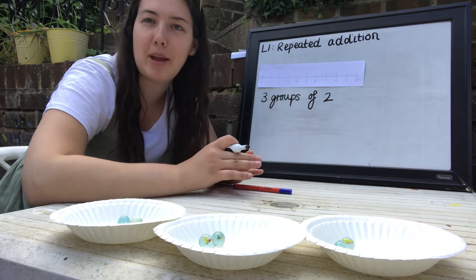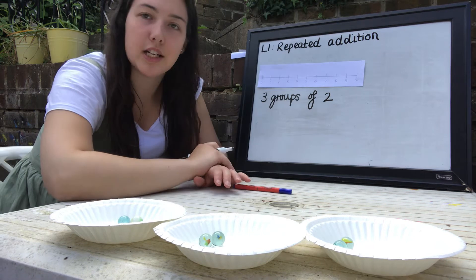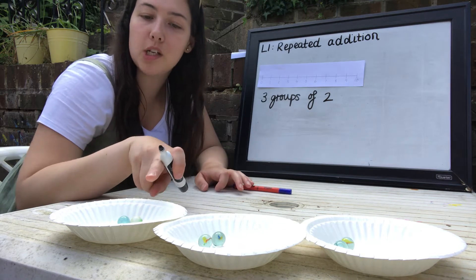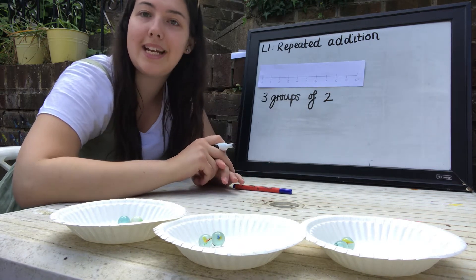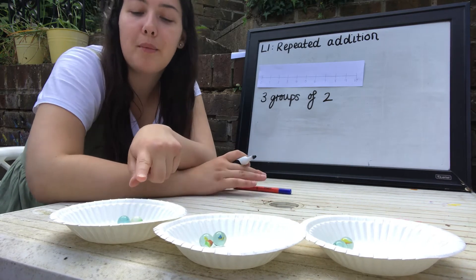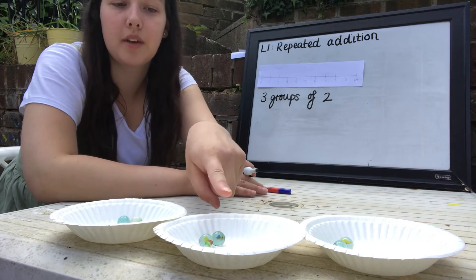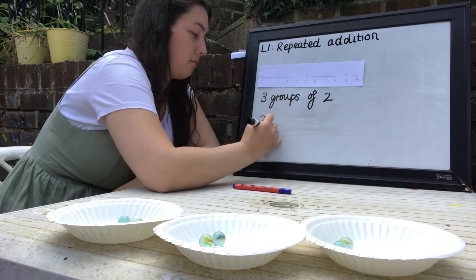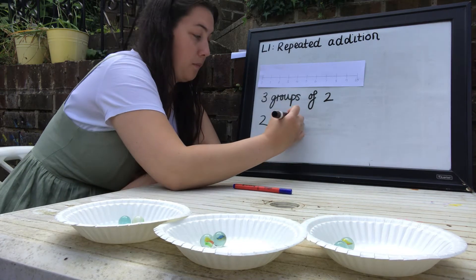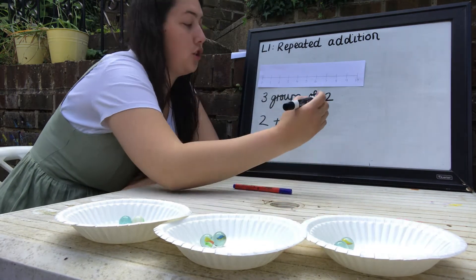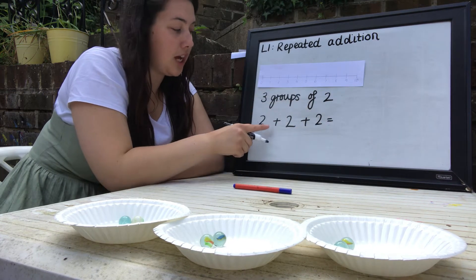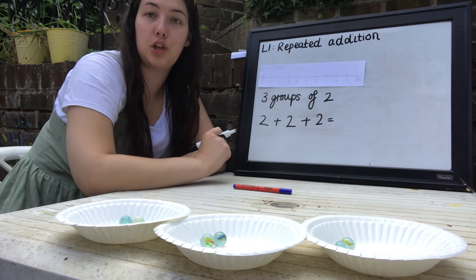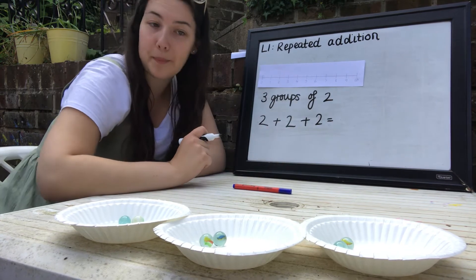Each of my groups has got two marbles, so I've got three groups of two — that's what we did last week. Hopefully you feel happy and know what that means. At the end of last week we used that information to write a number sentence. We know because we've got three groups that we need three numbers in our number sentence, and we need to add two, plus two, plus two. Our number sentence is two add two add two.